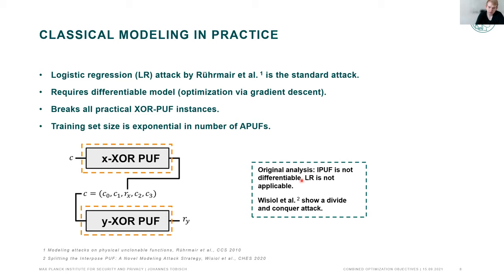In classical modeling attacks, you use challenge-response pairs, and logistic regression is able to break XOR PUFs for all feasible instance sizes. Wisiol et al. showed how this technique can be adapted to the Interpose PUF, even though they did not provide a fully differentiable model of the IPUF. Instead, they showed you can divide and conquer the Interpose PUF and attack the different parts separately.